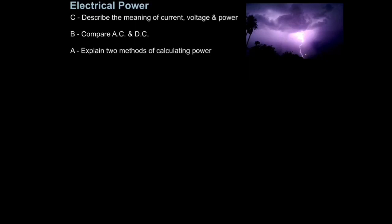In this lesson we will look at electrical power. The first aim is to describe the meaning of current, voltage and power, then compare alternating current and direct current AC and DC, and then explain two methods of calculating power.